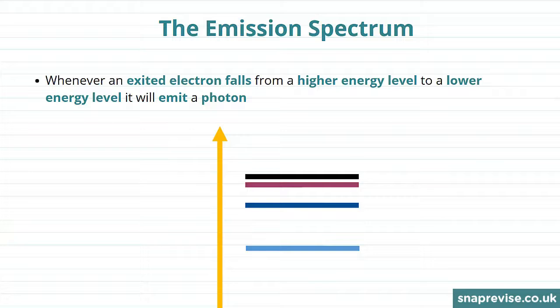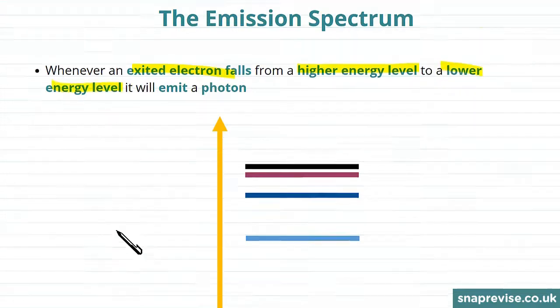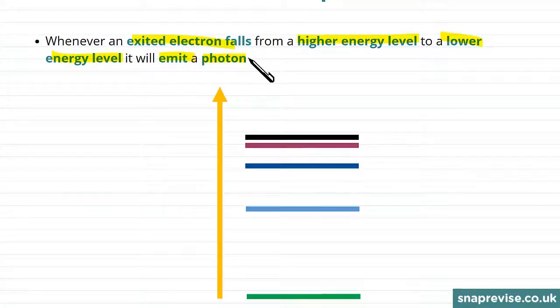We've previously talked about absorption spectrums and emission. Now we're going to talk about the emission spectrum. Whenever an excited electron falls from a higher energy level to a lower energy level, it will emit a photon.